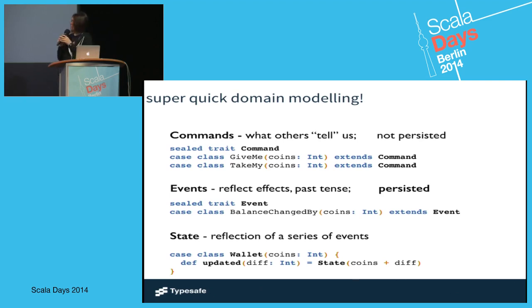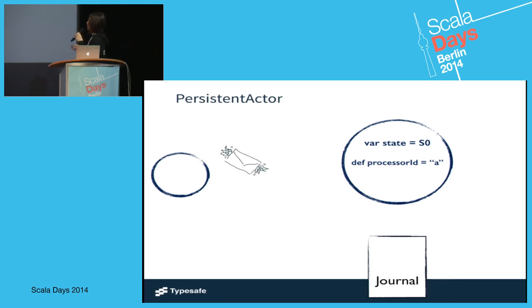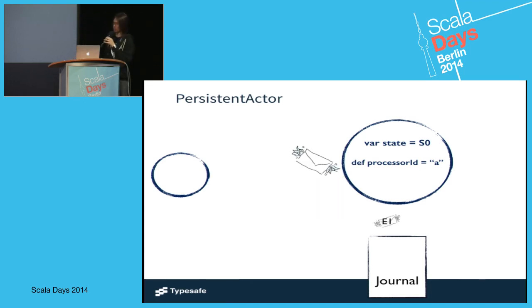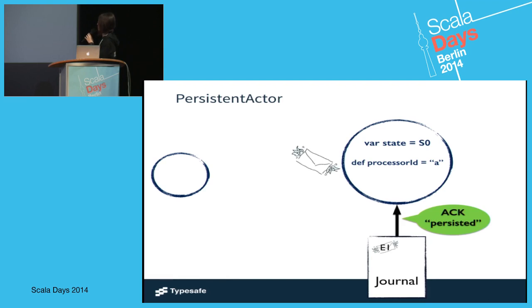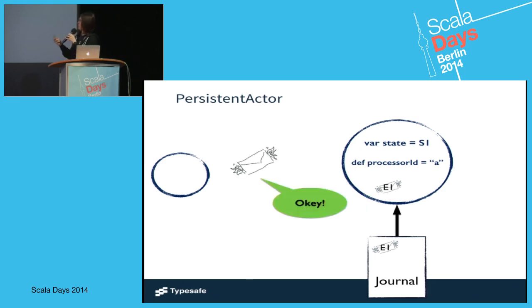The state will be modeled by a wallet class with a small helper method that returns a new state. Here's the graphical representation. This is our persistent actor, and some other actor is sending us a message. We get a command, generate some events, persist them into the journal. Once the journal confirms that the event has been persisted, we get a callback. Then we can apply the event and change the state of the wallet. After applying it, we reply — here's my money.